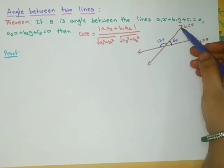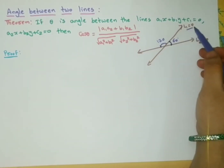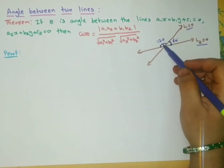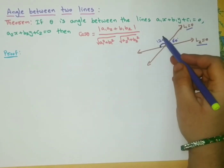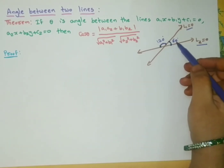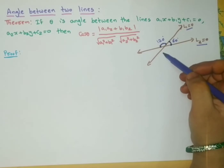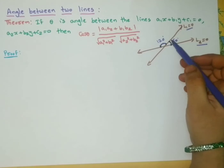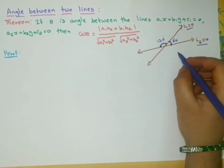Suppose we consider any two straight lines: one straight line L1 = 0 and the other straight line L2 = 0. The angle between these two straight lines — if you consider it as 120 degrees, then automatically the other angle is 60 degrees, because the total angle is 180 degrees. Which angle do we need to consider? You can consider either one, but to calculate the angle between any two lines, you have to consider the acute angle.